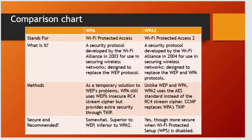WPA was introduced as a temporary solution to WEP problems. WPA still uses WEP's insecure RC4 stream cipher but provides extra security through TKIP. Unlike WEP and WPA, WPA2 uses the AES advanced encryption standard instead of the RC4 stream cipher, along with CCMP. WPA2 replaces WPA's TKIP and is considered superior to WEP but more secure than WPA.